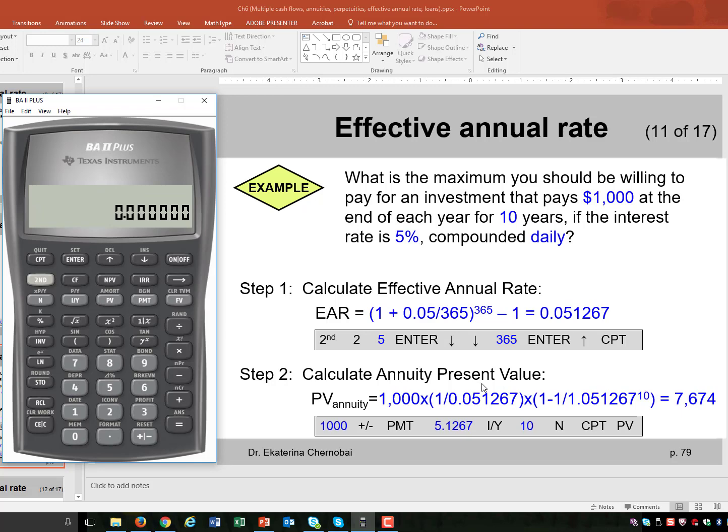Let's start. We need to calculate annuity present value. So we will be computing present value. For that we need to enter N, IY and PMT.